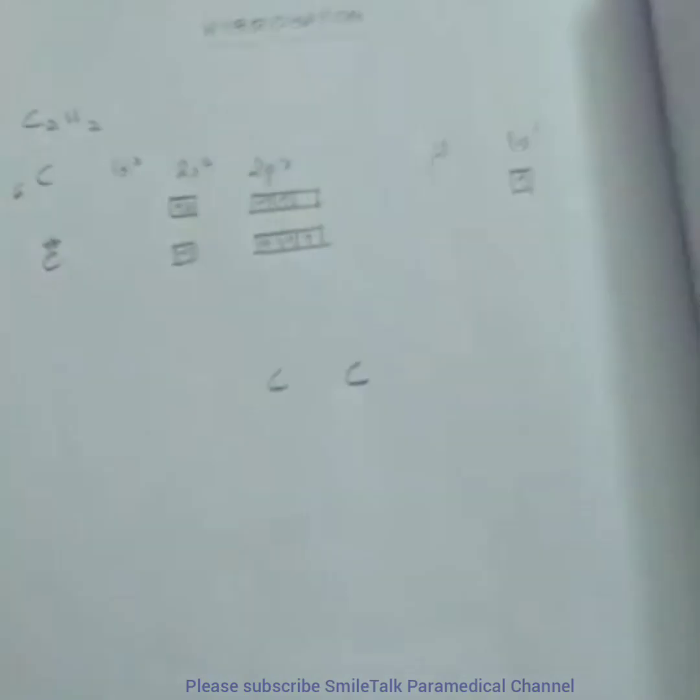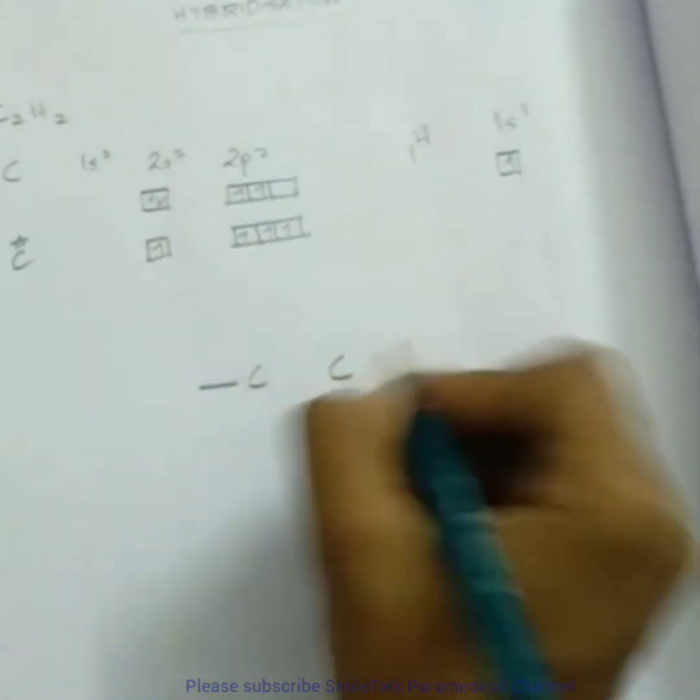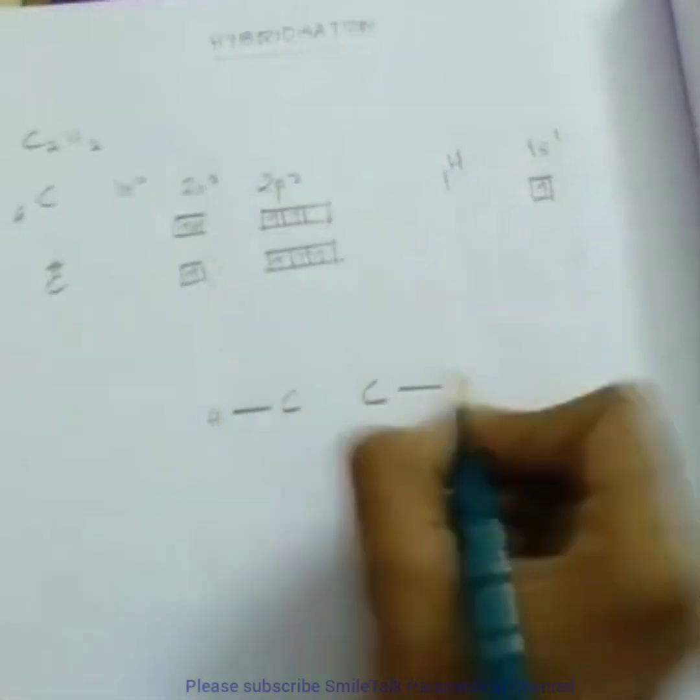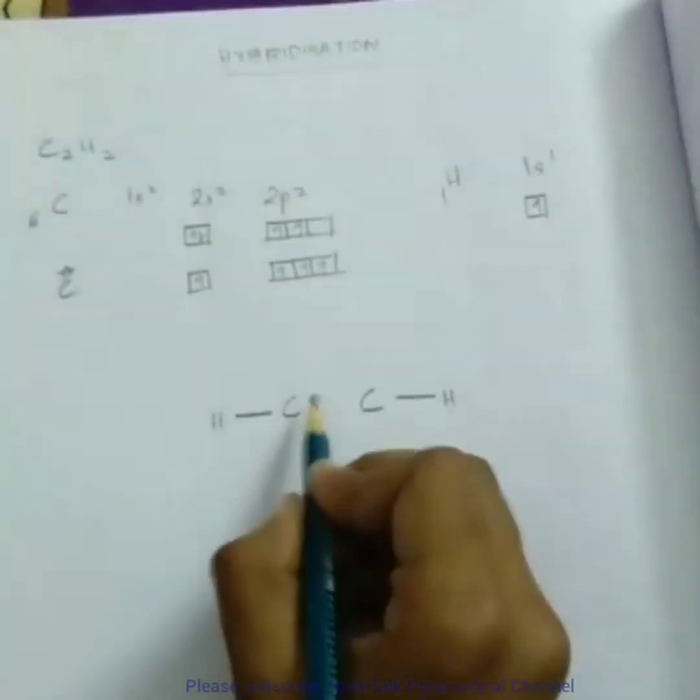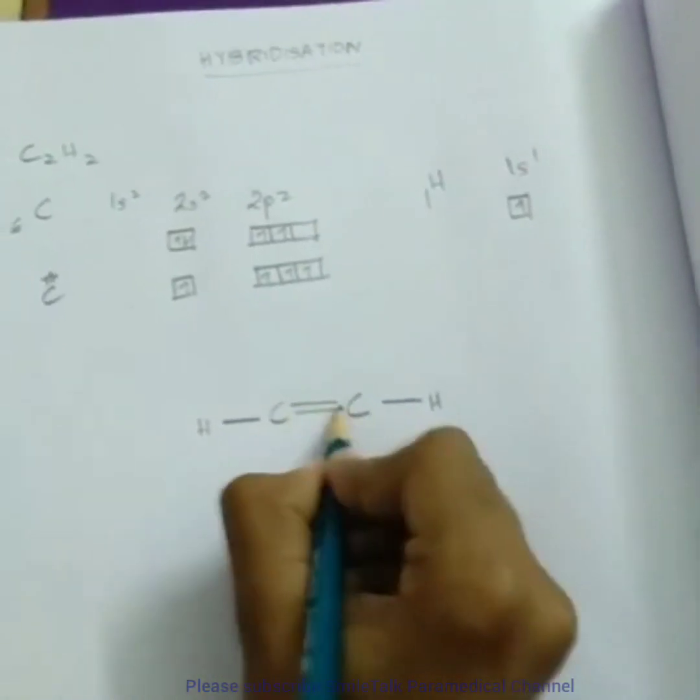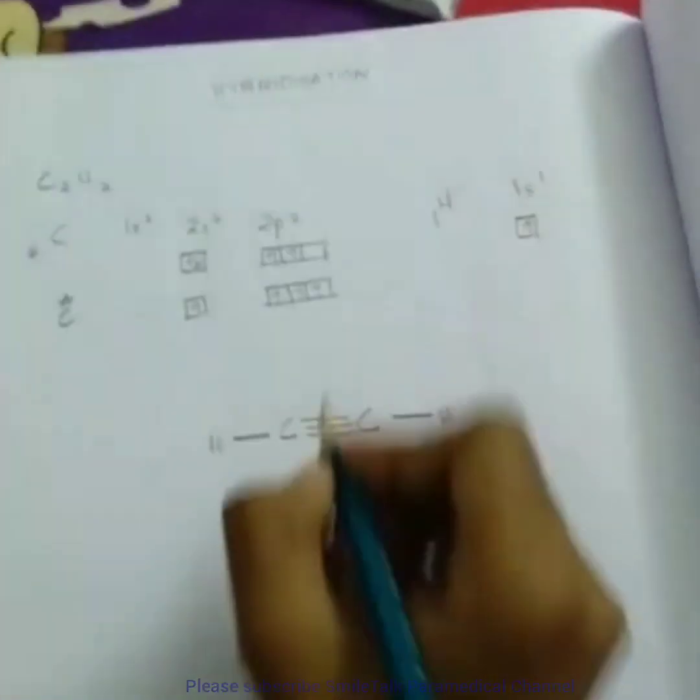There are two carbon atoms and two hydrogen atoms. Thus here we can see we need a triple bond here.